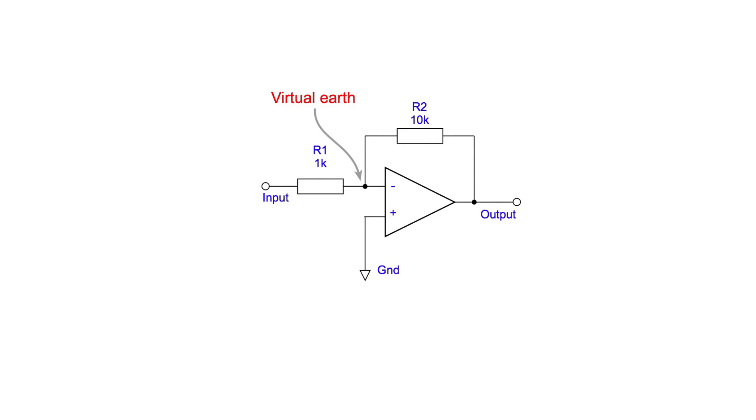If the inverting input is at a virtual earth potential then the input resistance must be equal to R1 because it's connected between the input and ground. So in our design if we don't want the input resistance of 1k we simply make it the value we want and then recalculate the value of R2 to give us the right gain.